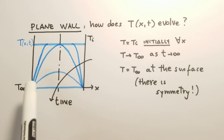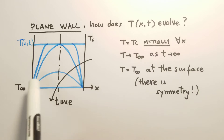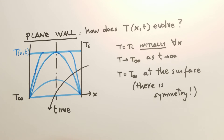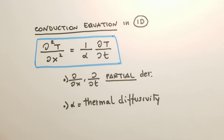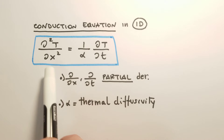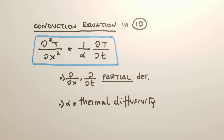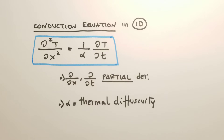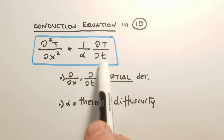There is a symmetry in space but also a symmetry of the temperature profile, because the boundary conditions are the same — T-infinity on both sides. The differential equation that describes this problem is the conduction equation in one dimension: the second derivative of temperature with respect to x equals 1 divided by alpha times the partial derivative of temperature with respect to time. These are partial derivatives because temperature depends on both time and space.